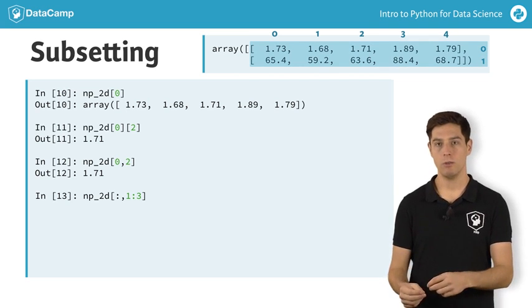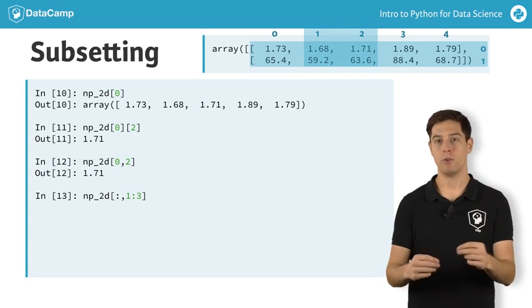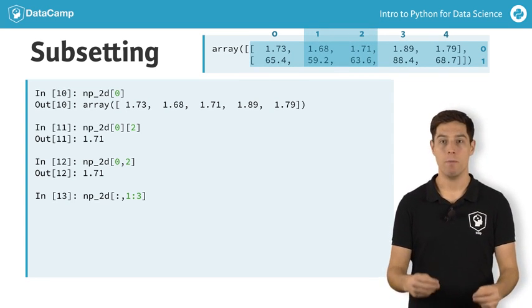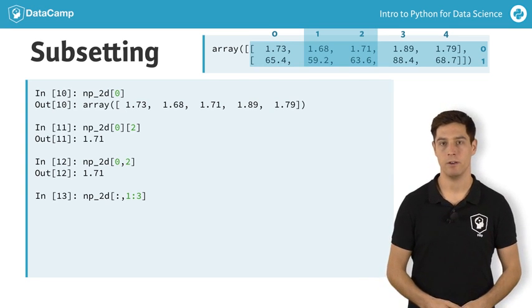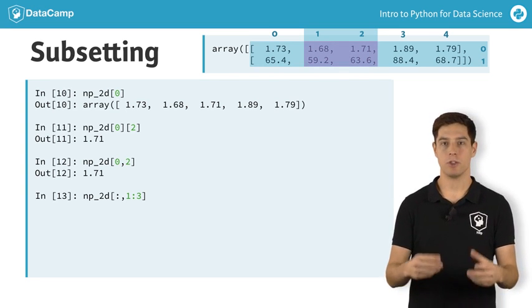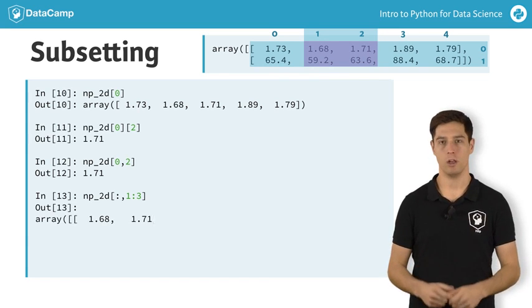You only want the second and third column, so you put in the indices 1 to 3 after the comma. Remember that the third index is not included here. The intersection gives us a 2D array with two rows and two columns.